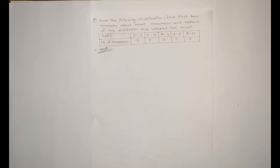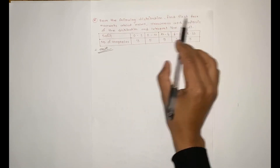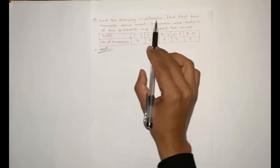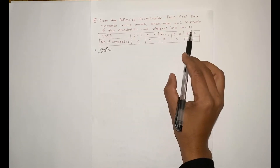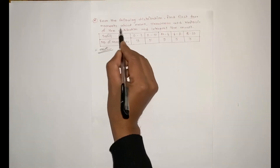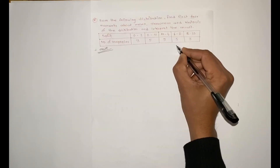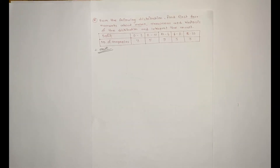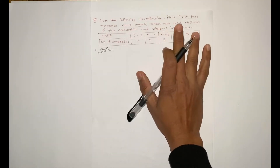Hello everyone. From the following distribution, find the first four moments about mean, skewness and kurtosis of the distribution and interpret the result. This means we need to find mu1, mu2, mu3, mu4, and perform the skewness test.